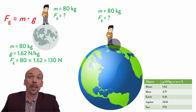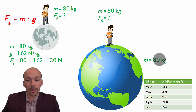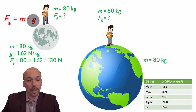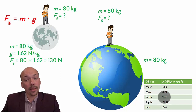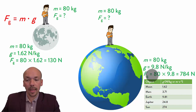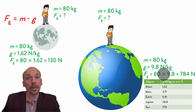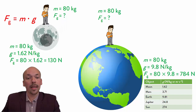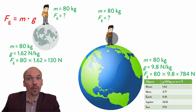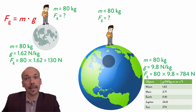Now he's standing on Earth, and on Earth he has a different gravitational force. His mass is still 80 kilograms because that's the same. G, which we get from the table, is now 9.8. And now we get 80 times 9.8 equals 784 newtons. So you can see, although his mass is the same in both places, his gravitational force or weight is different. Here it will cost him more force to stand up than on the moon, and that has to do with the mass of the body he is standing on.